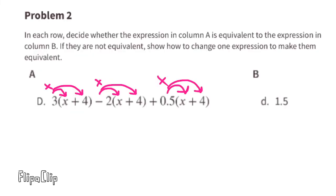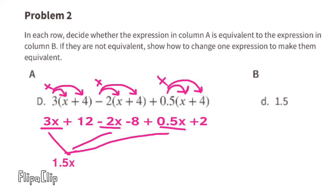D. 3 times x plus 4, negative 2 times x plus 4, and a positive 0.5 times x plus 4. That gives us 3x plus 12, minus 2x, minus 8, plus 0.5x, plus 2. Collect the like terms. 3x minus 2x is 1x, plus 0.5x. That's 1.5x. 12 minus 8, plus 2. That's a positive 6.